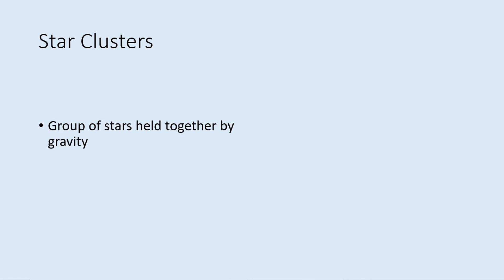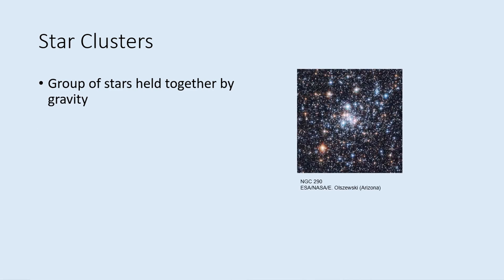A star cluster is a group of hundreds to hundreds of thousands of stars that are all held together by their mutual gravity. The closest ones can be seen in the sky with the naked eye, while farther ones show up as fuzzy blobs in small telescopes.